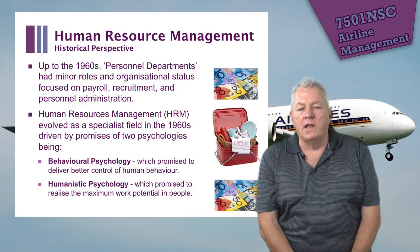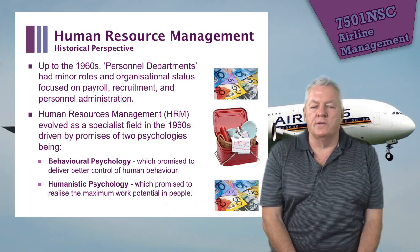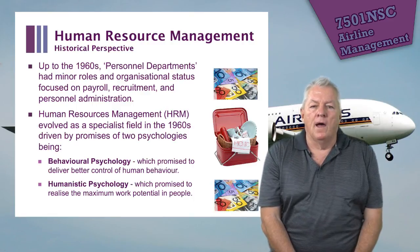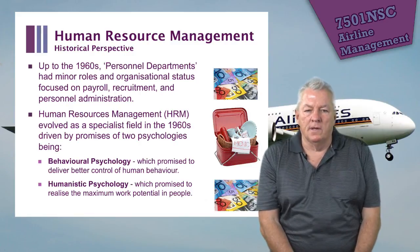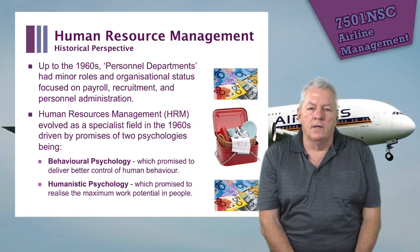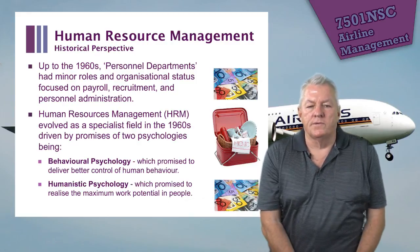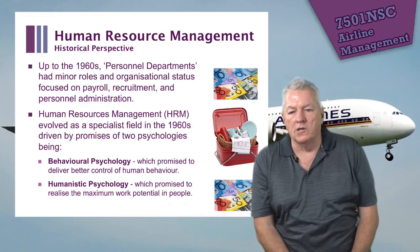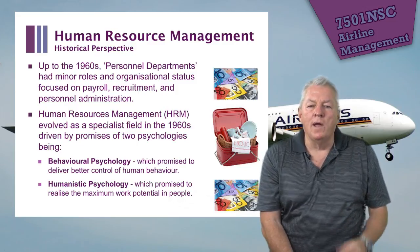Up until the 1960s, we had personnel departments. They had minor roles in the organisation — things such as payroll, recruitment and personnel administration. They evolved into the Human Resources Management discipline in the 1960s, driven by the premises of two psychologies — behavioural psychology and humanistic psychology — the idea that if you actually dealt with staff in a human way, you could get more out of them.